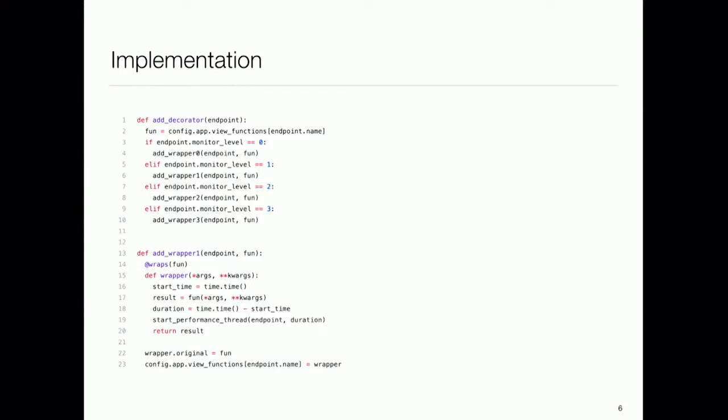How have we implemented this? Flask has an API for its view functions — basically a dictionary from the function name to the actual function implementation. We read from this dictionary and monkey patch each function with the desired monitoring level. For example, for monitoring level one, we add the monitoring code on line 13 — it just times the function and at the end saves the data into the FMD database.